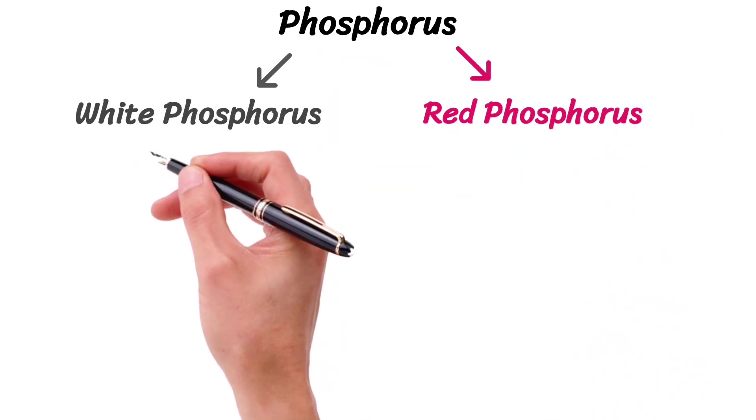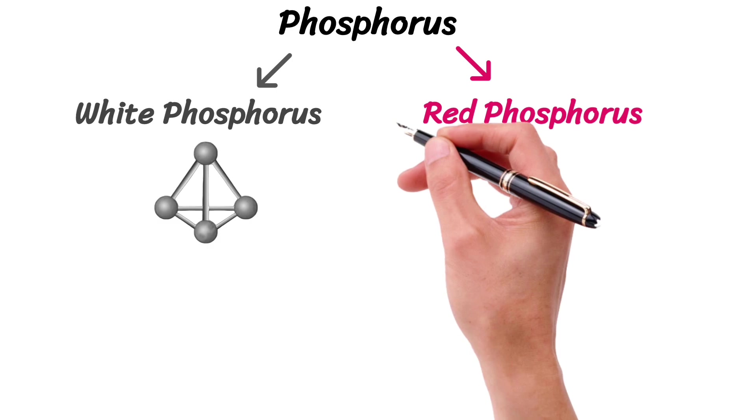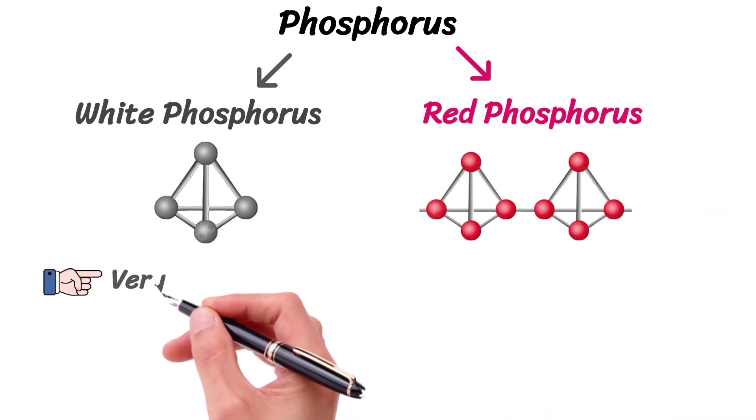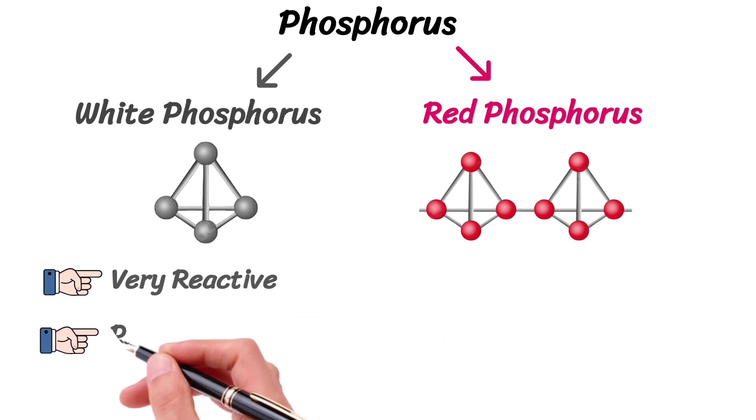Both exist as tetraatomic molecules but different in arrangement of atoms. Both allotropes also show different physical properties. White phosphorus is very reactive, poisonous, and waxy solid.